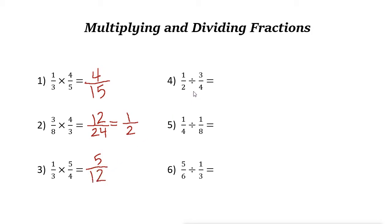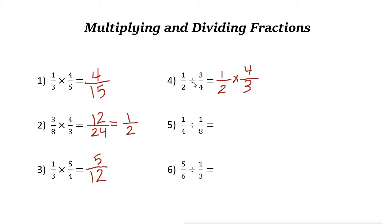Now let's look at division. For 1/2 divided by 3/4, use the Keep-Change-Flip method: keep the first fraction (1/2), change the division sign to multiplication, and flip the second fraction — so 3/4 becomes 4/3.